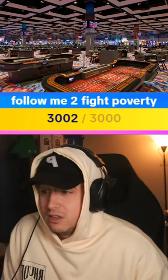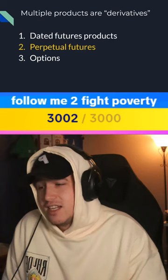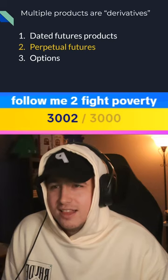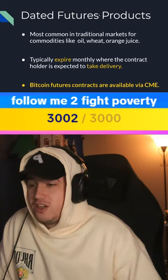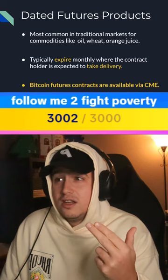There are multiple derivatives products. Dated futures are typically found in traditional markets — oil, orange juice, copper, silver, that kind of stuff. Perpetual futures are the flagship product of cryptocurrency. Options are common in traditional markets but not really common in crypto. Dated futures typically expire in a couple of months and the holder is expected to take delivery — so if you buy an orange juice contract, you better be ready to accept a delivery of a ton of orange juice.